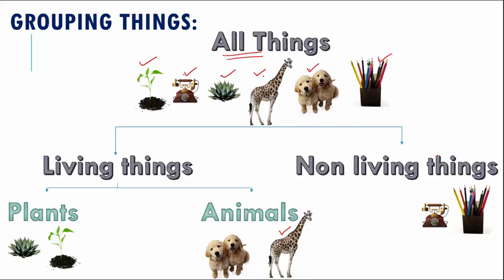We can simply look at things around us and classify them into living things and non-living things. Under living things, we can put them into two groups — the first one is plants and the second one is animals. Look at the things around your house and start grouping them into living and non-living, into plants and animals.